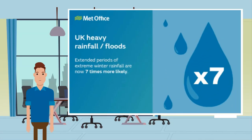Also, increased extreme weather: there has been an increase in extreme weather events. Nine out of ten of the warmest years on record have occurred in the 21st century. Prolonged periods of hot, dry weather are becoming more common; precipitation is becoming more intense, increasing flooding risk; tropical storms are becoming more intense; and forest fires are happening more frequently — all thought to be because of the changing climate.